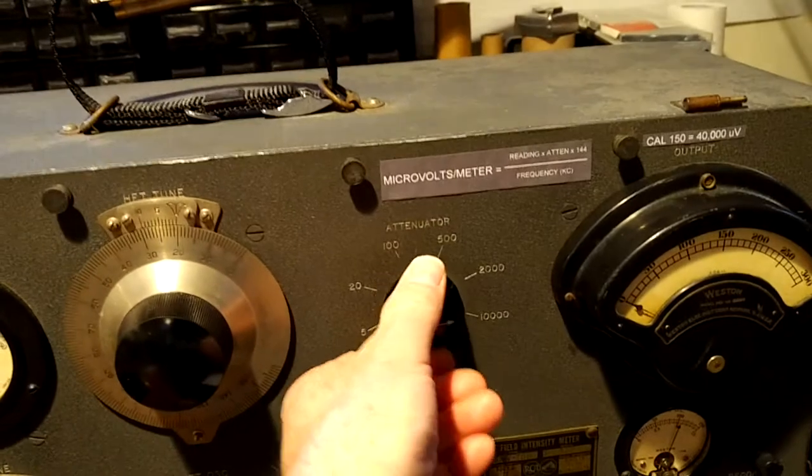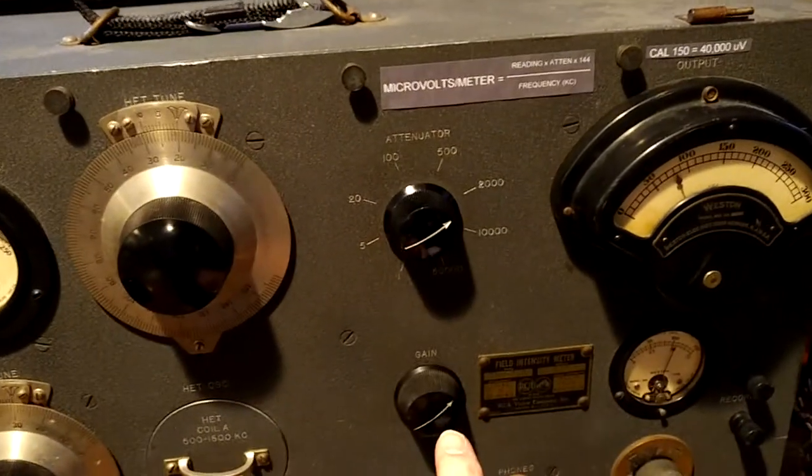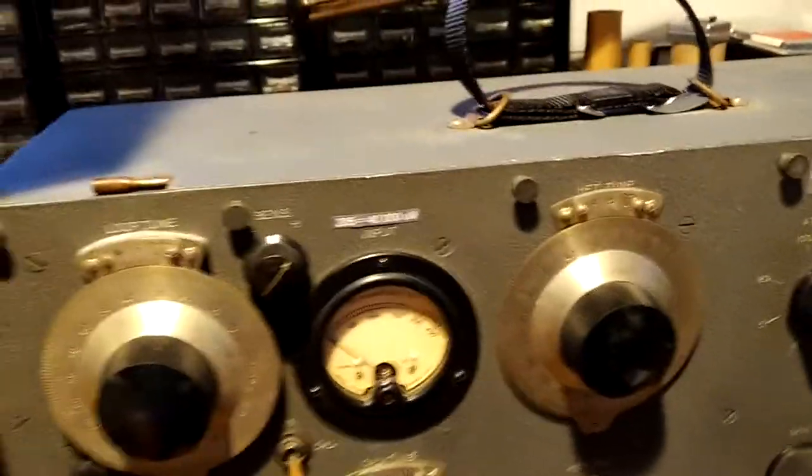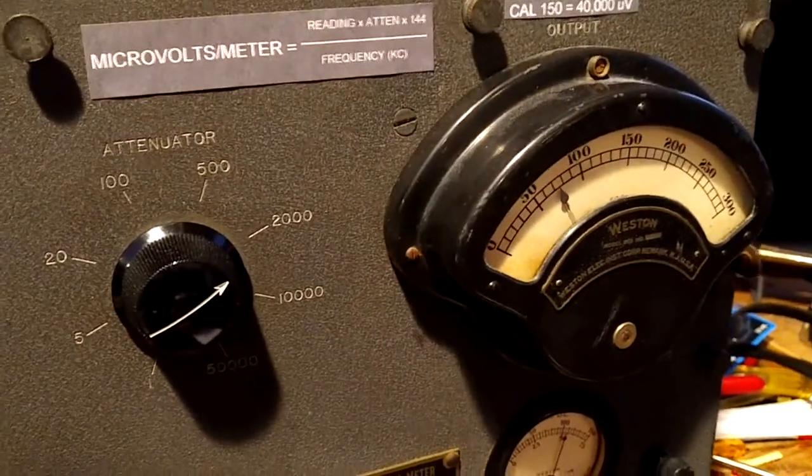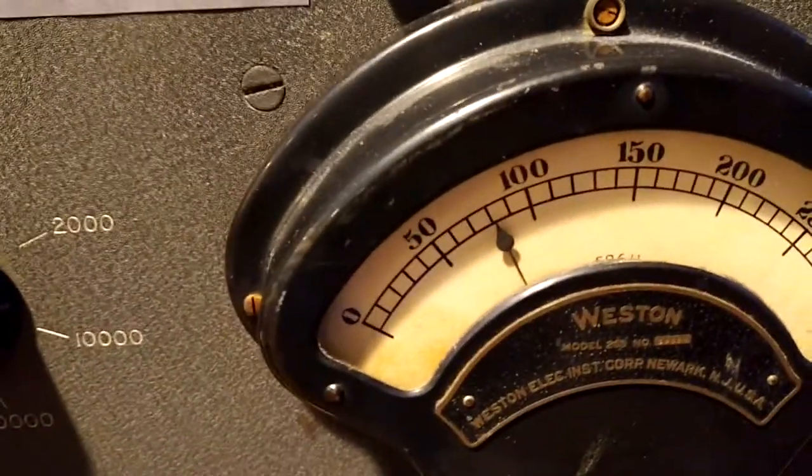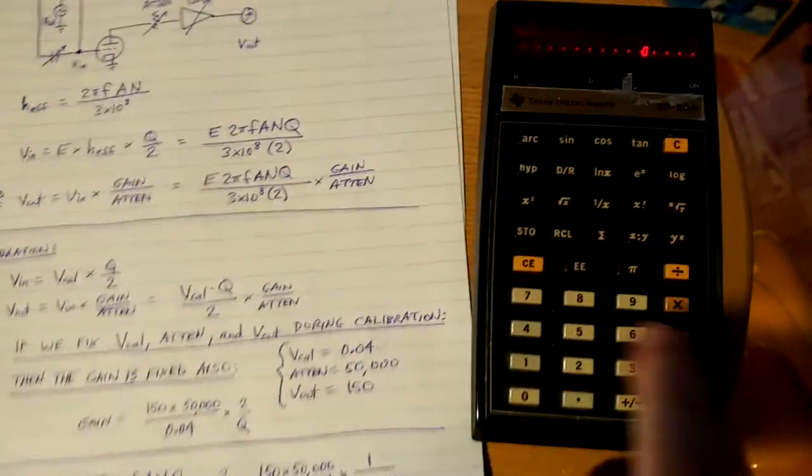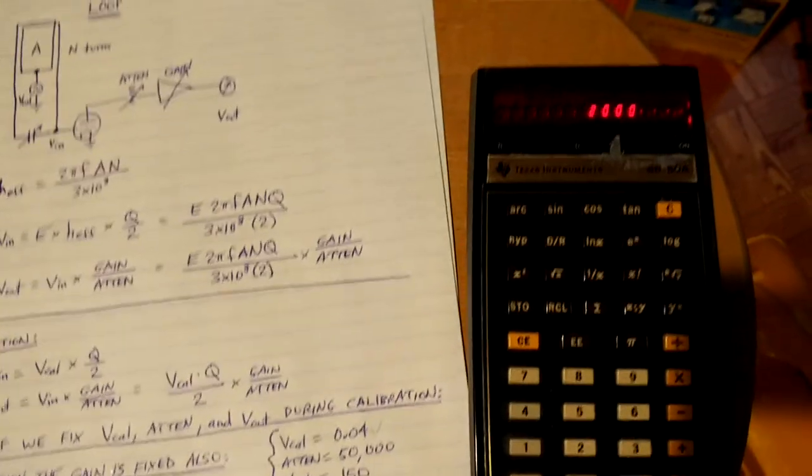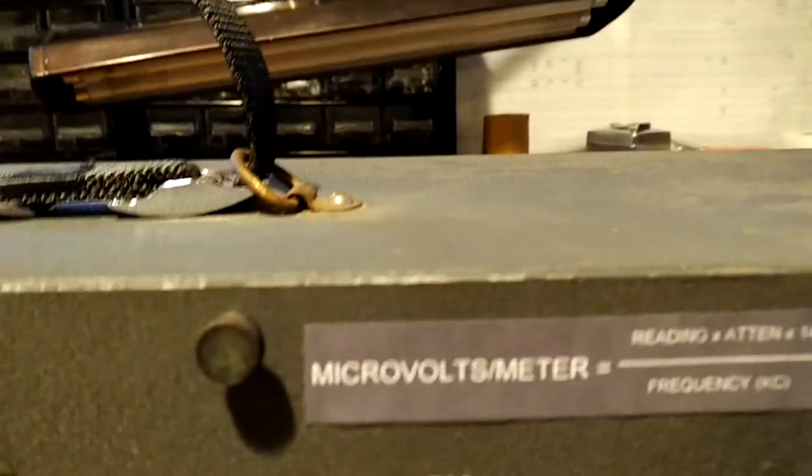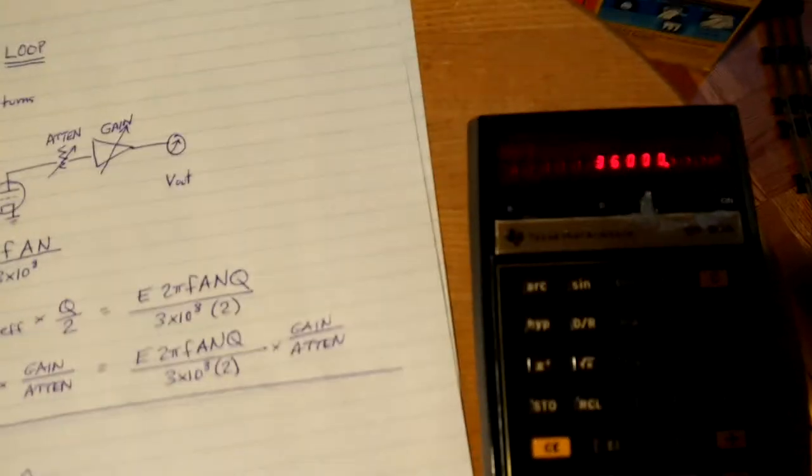And now, we're going to try to get the signal in. We don't touch this. And we adjust the loop for the direction of the loop for a maximum signal. It's right there. So, what we have then is about 80 on this meter. So, 80 times 2,000 is the attenuator value. 80 times 2,000 times 144 divided by 640.